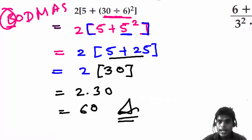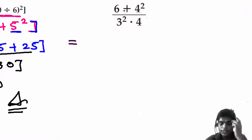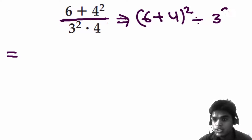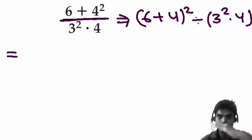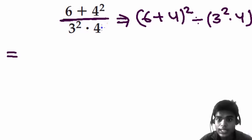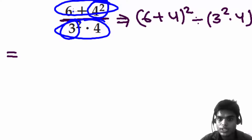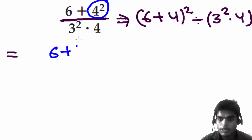Now the third example. Written properly it is: six plus four, whole squared, divided by three-squared times four. The division bar separates numerator and denominator. To solve this: first square each part, then solve the whole denominator, then the numerator, and finally divide numerator by denominator. So: six plus four-squared divided by three-squared times four.